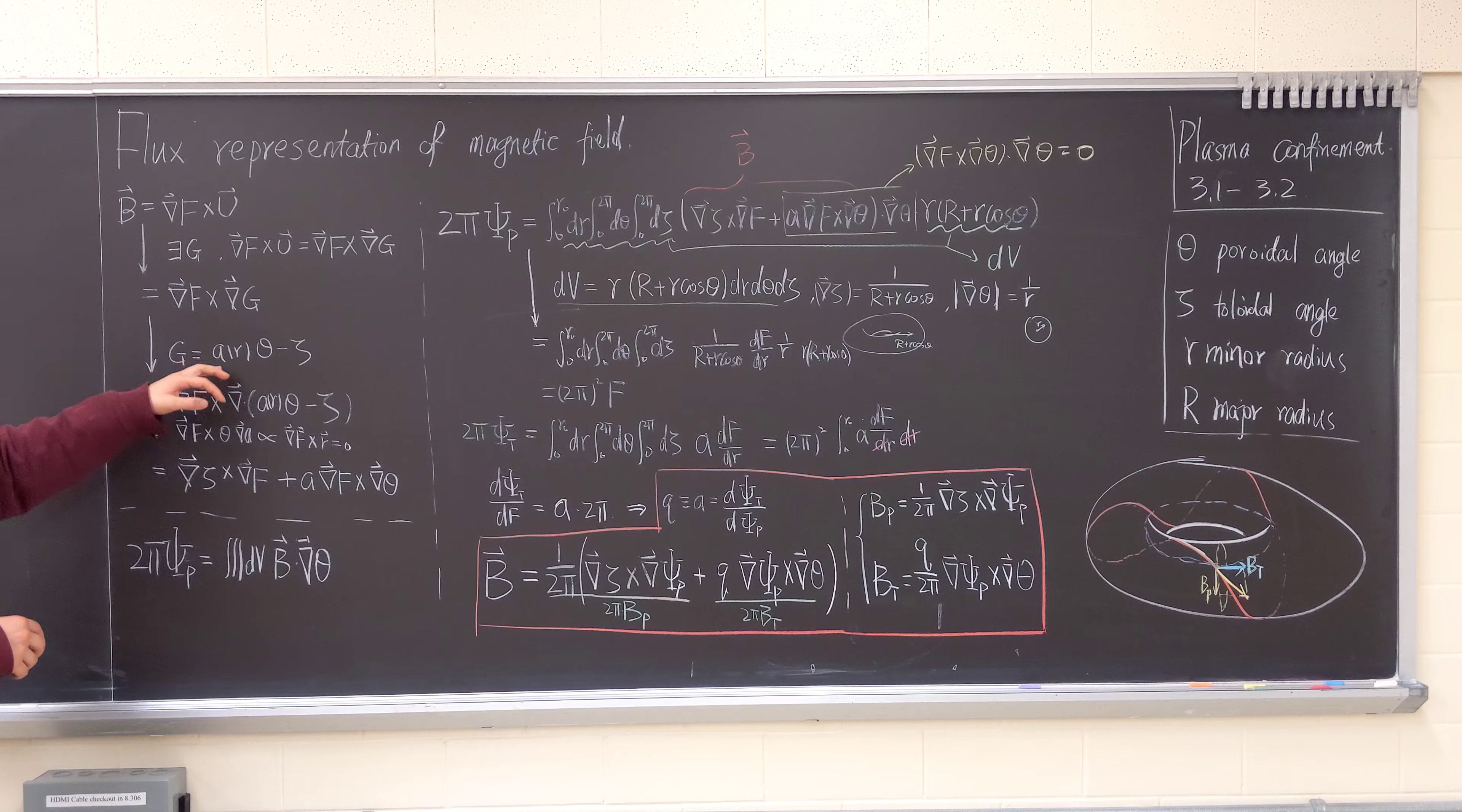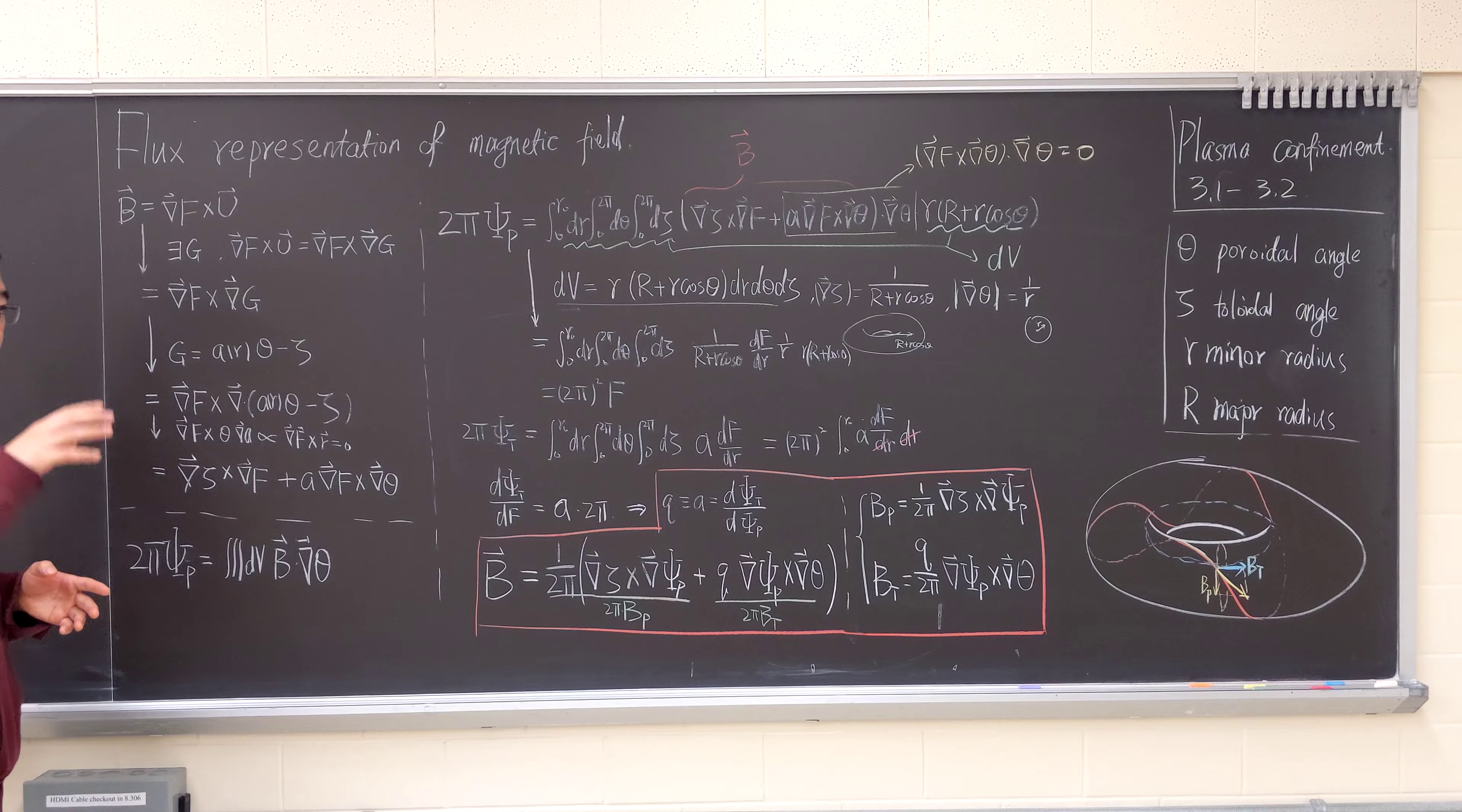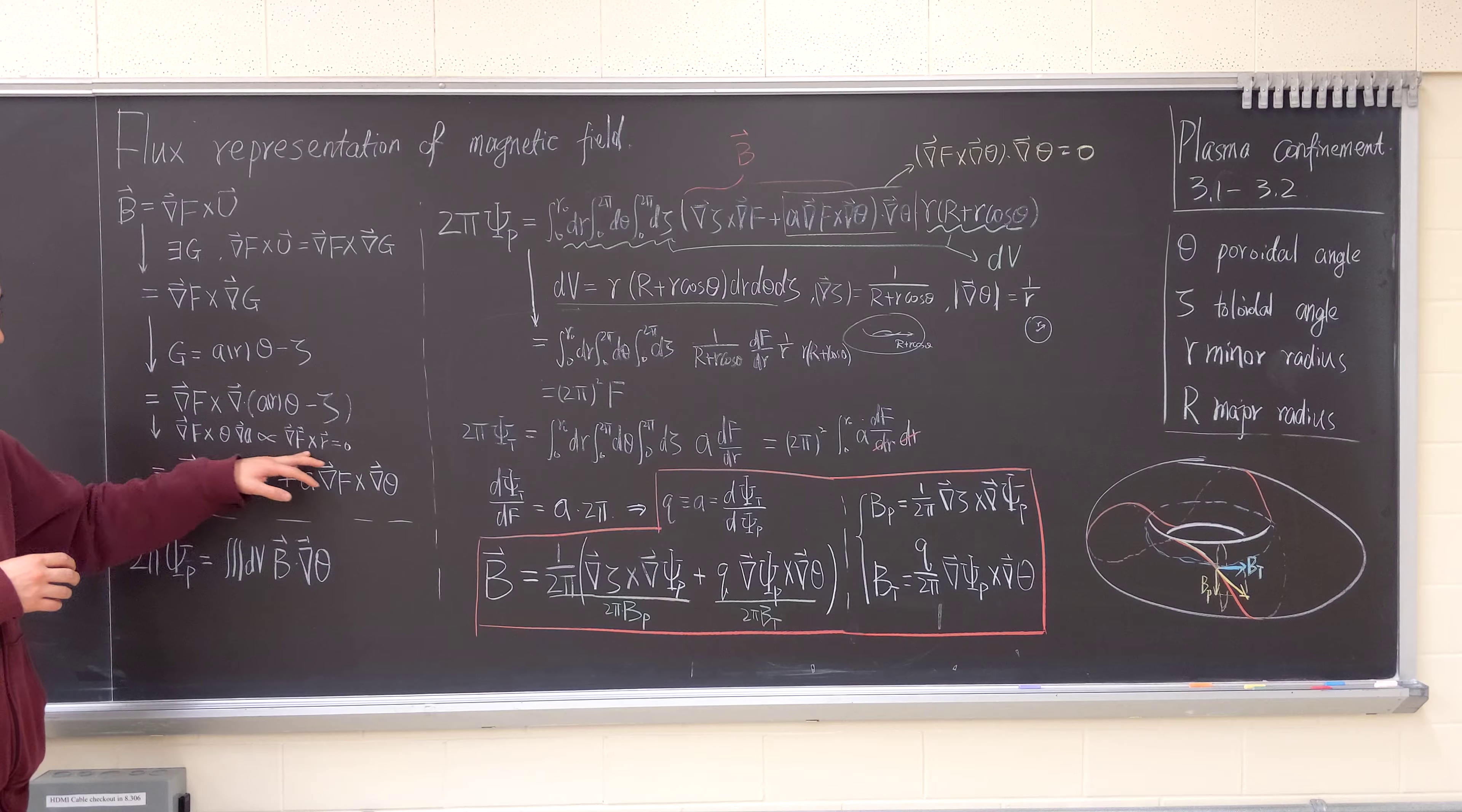So we plug the G into this expression, and we know that the gradient of AR is in the R direction. And since this is a flux label, if we do a parallel, then the cross product will go to zero.